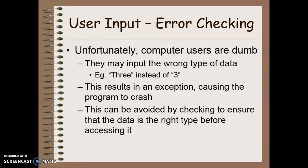Now unfortunately, as we all know, computer users are pretty dumb. So they're often going to make mistakes in the way they use your program. And obviously you don't want your code to crash just because they put in the wrong type of data. So for example, they might put the word 3 instead of the number 3. And this would result in an exception causing the entire program to crash. So this can be avoided by checking to ensure that the data is of the right type before we actually try to access it.